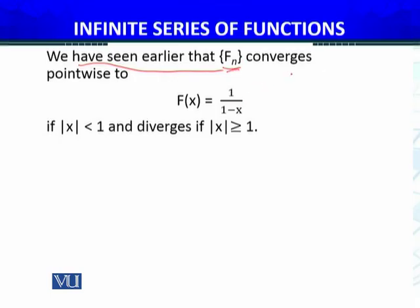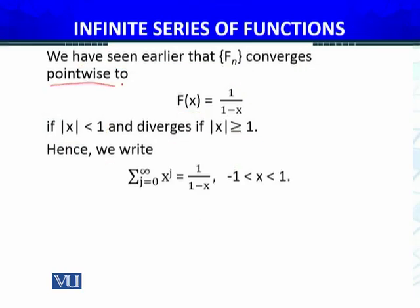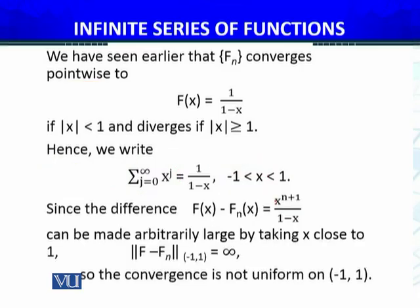We saw in Analysis 1 that this sequence of partial sums converges point-wise to f(x) = 1/(1−x) when |x| < 1, and diverges when |x| ≥ 1. I am not going into the detail of this again. Hence we can write that the series — which is the summation from j = 0 to infinity of f_j(x) — has sum equal to 1/(1−x) whenever x ∈ (−1, 1). So point-wise convergence is established up to this point.